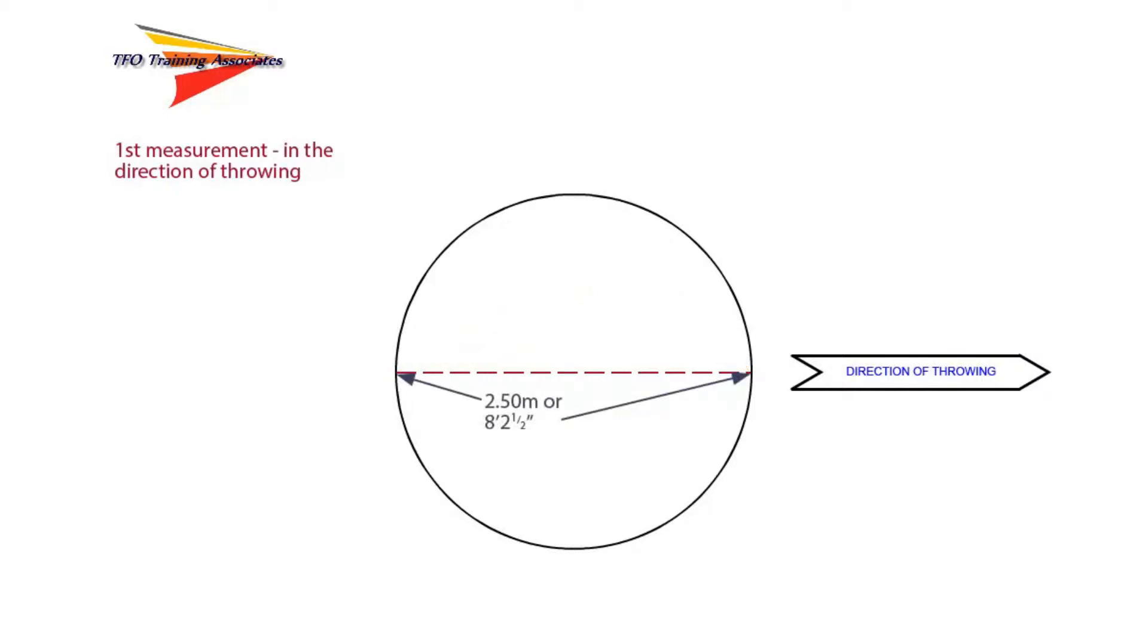In the discus event, the diameter should be 2.50 meters or 8 feet 2.5 inches. Mark the midpoint of this line, either 1.0675 or 1.25 meters, respectively.